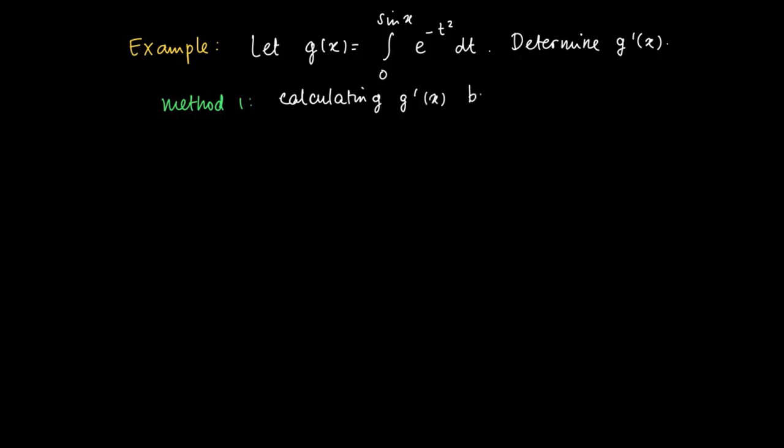So this would mean that we need to find the primitive of e to the power minus x squared. But here this will not work. There is no easy function that could solve or help us with this problem. e to the power minus x squared does not have a primitive in the type of functions that we know.